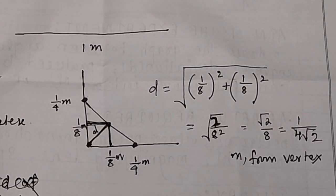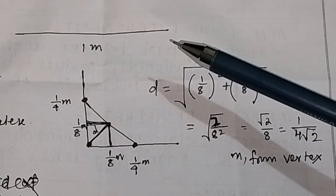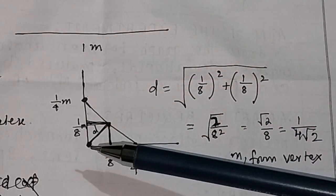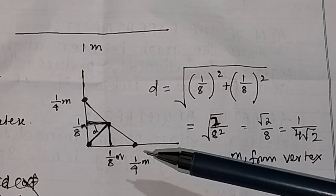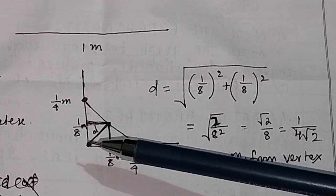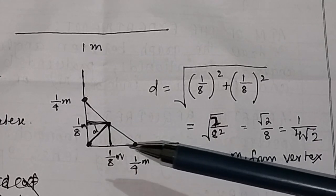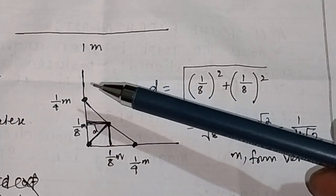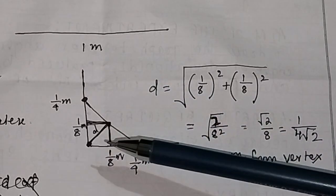You are given a uniform metal rod of length 1 meter, which is bent at 90 degrees so as to form two arms of equal length. This means one arm is half a meter and the other arm is also half a meter. We have to find out the center of mass of this bent rod.